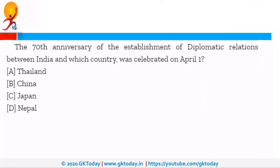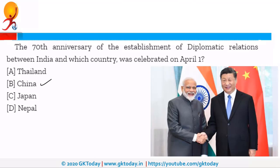The 70th anniversary of the establishment of diplomatic relations between India and which country was celebrated on 1st of April? The right answer is China. India and China have completed 70 years of diplomatic relationships. It is important to note that India was the first non-communist country in Asia to have diplomatic relations with PRC, that is People's Republic of China, which is the official name of China.